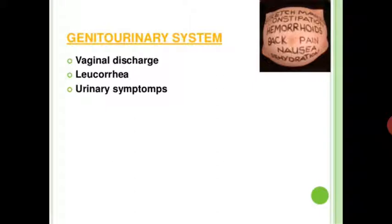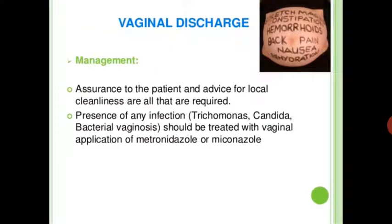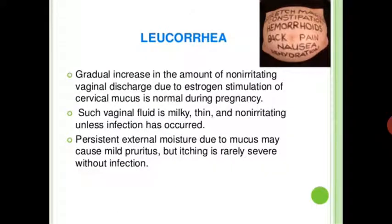Next is the genitourinary system: vaginal discharge, leucorrhea, and urinary symptoms. Management of vaginal discharge: reassurance to the patient and advice for local cleanliness are required. If infection — trichomonas, candida, or bacterial vaginosis — is present, it should be treated with vaginal application of metronidazole or miconazole. Next is leucorrhea.